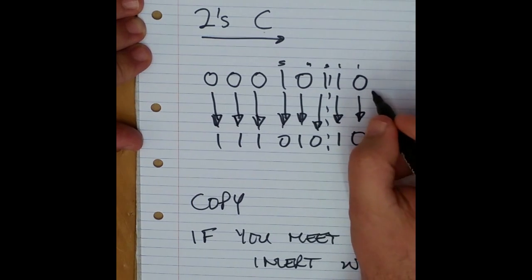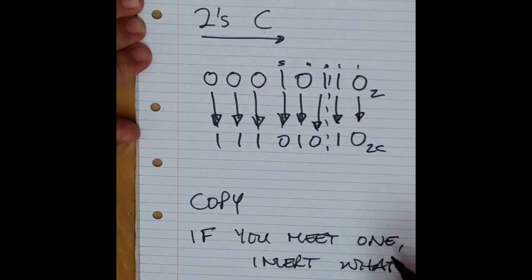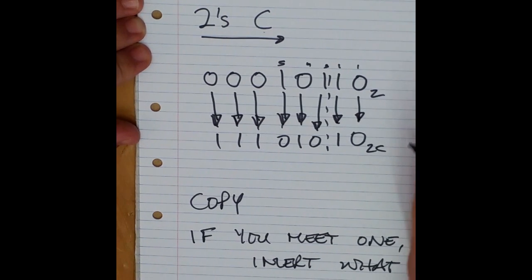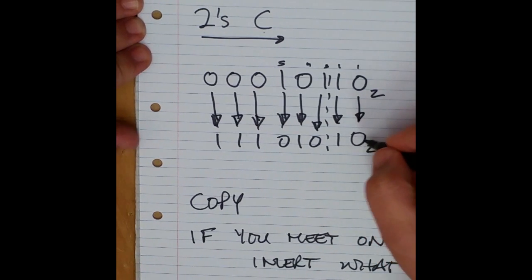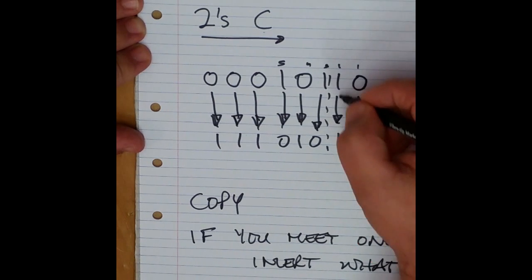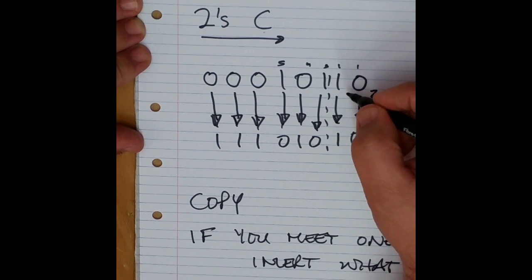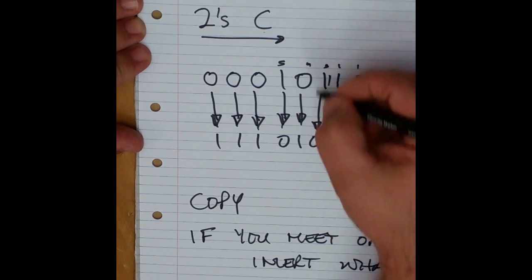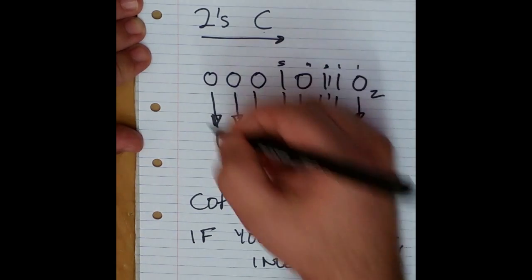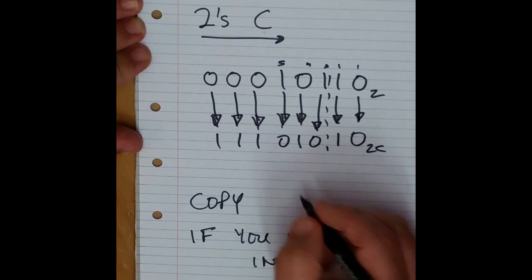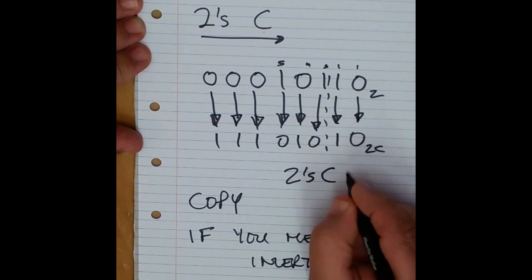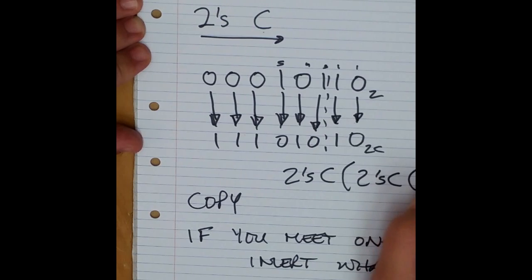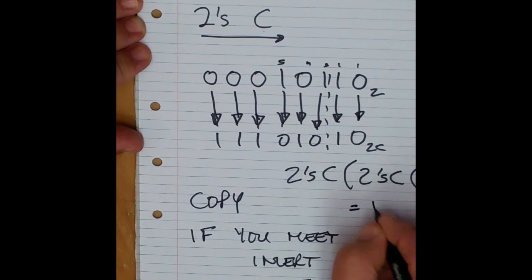So copy the zero, copy the one — I've met a one, so from now on I invert. And there we have the binary two's complement. The interesting thing is it works backwards too: starting with the right, copy the zero, copy the one — I've reached a one, so invert everything else. So the two's complement of the two's complement of something equals that something.